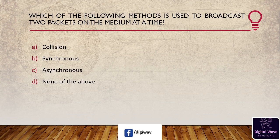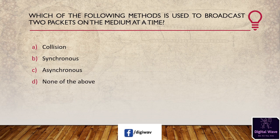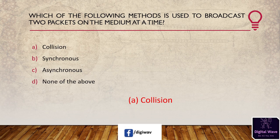Next question: which of the following methods is used to broadcast two packets on the medium at a time? Options are: collision, synchronous, asynchronous, and none of the above. The answer is collision — a collision occurs when two or more computers are attempting to transfer data across a network at the same time.